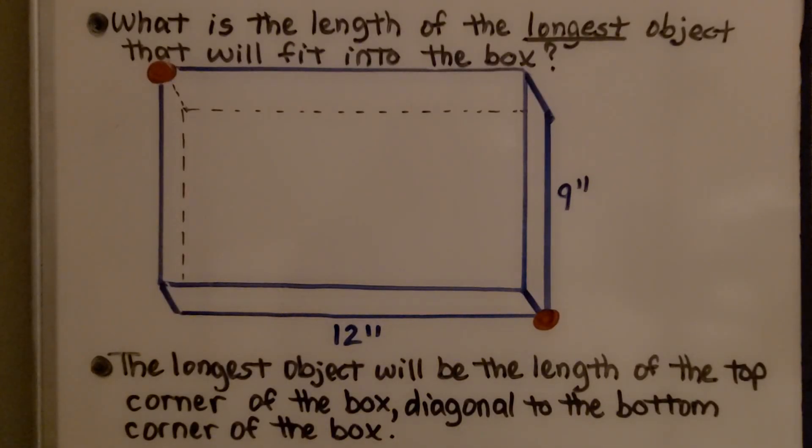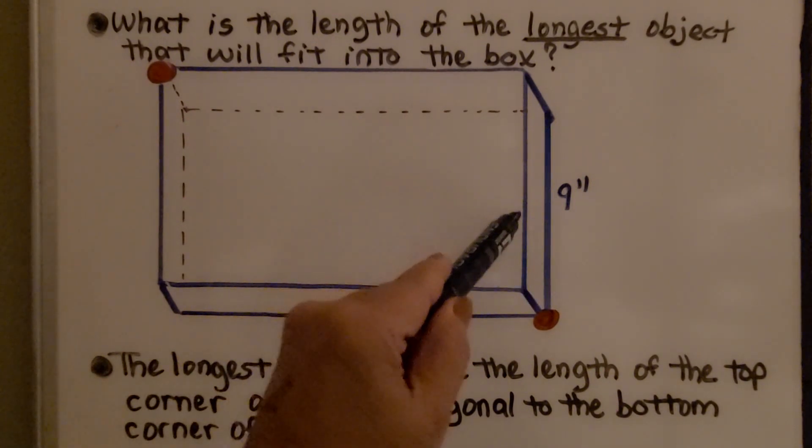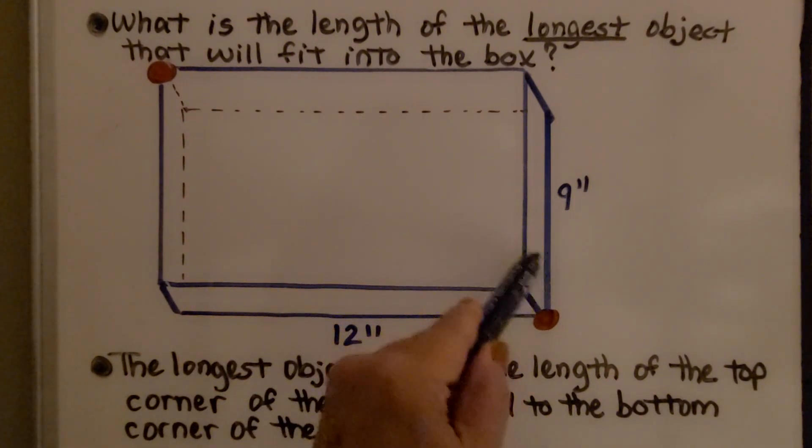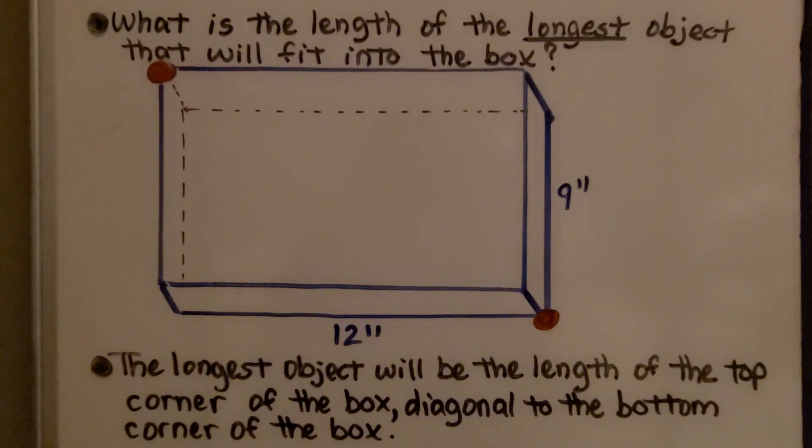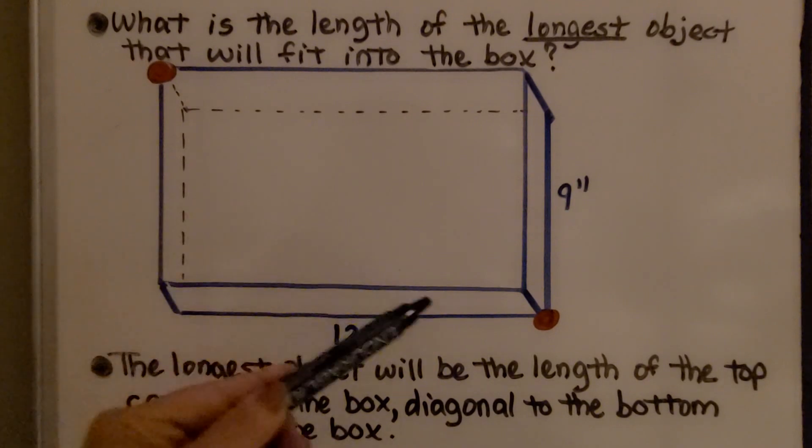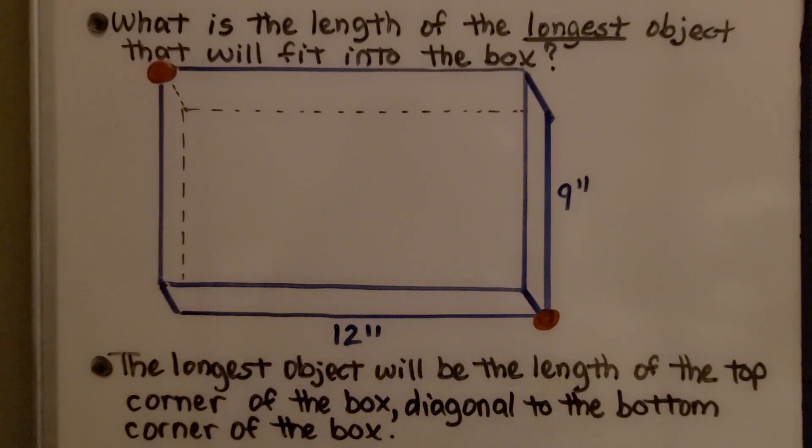So what is the length of the longest object that will fit into the box? We know it is 12 inches across and 9 inches here. We also know that it's 4 inches tall. Well, the longest object will be the length of the top corner of the box diagonal to the bottom corner inside the box.